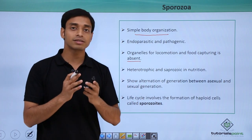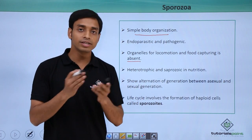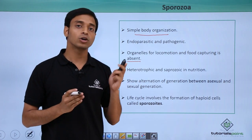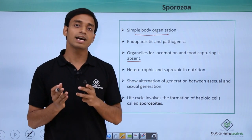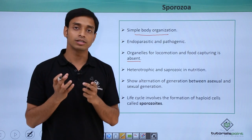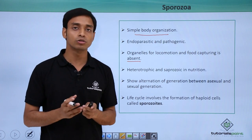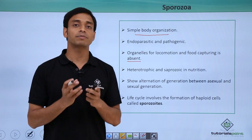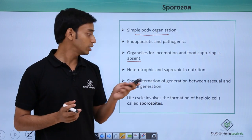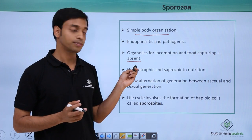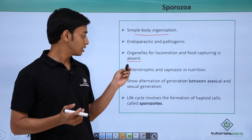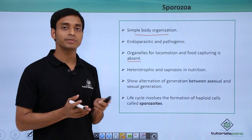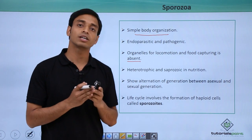The organelles for locomotion and food capturing are absent in Sporozoa. This is one of the biggest differences between the other three groups and this group. The other three groups have specialized locomotory organelles, but Sporozoa does not have any type of specialized organelles for locomotion or food capturing.